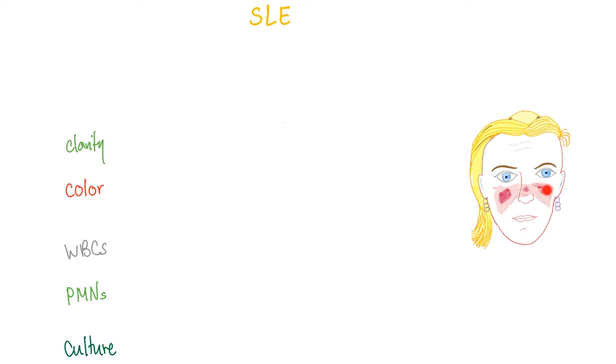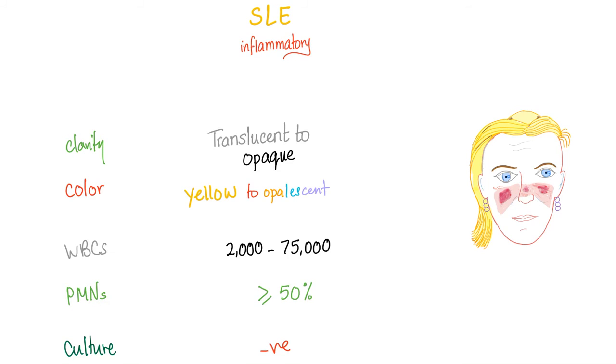Malar rash that involves the cheeks, the nose, but spares the nasolabial fold. In a female in her childbearing age, this is probably lupus. What kind of autoantibodies can we see? Anti-double-stranded DNA, anti-Smith antibodies, anti-U1-RNP antibodies, and anti-ribosomal P proteins. How about the complement level in the plasma? Low, called hypocomplementemia. Now pause. All right, folks. Lupus is an inflammatory arthritis, so same exact thing as gout and rheumatoid. Clarity, translucent to opaque, which is not normal because the normal is transparent. Color yellow to opalescent, which is not normal because the normal is colorless. White blood cell, 2,000 to 75,000, which is not normal because normal is less than 200. PMNs, greater than or equal 50%, which is not normal because the normal is less than 25%. Cultures are negative because there are no bacteria. This is normal.